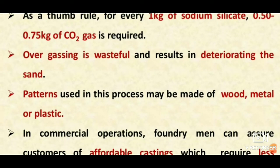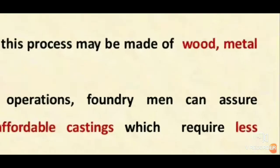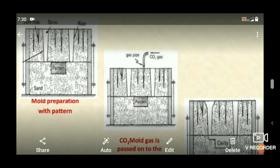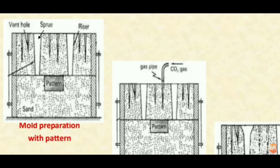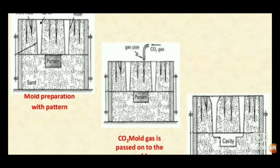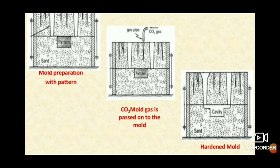Patterns used in this process may be made of wood, metal, or plastic. In the diagram, the cope and drag are placed and a pattern is positioned. A sprue, riser, runner, and vent holes are made. Then carbon dioxide gas is passed in so that the mold cavity is hardened, and the final hardened mold is obtained.